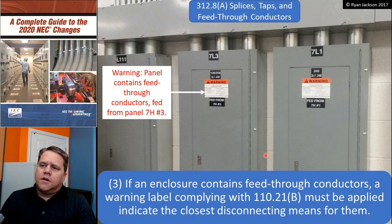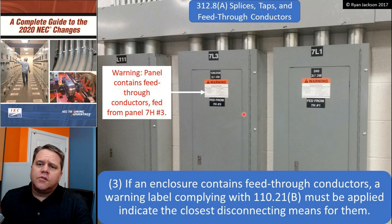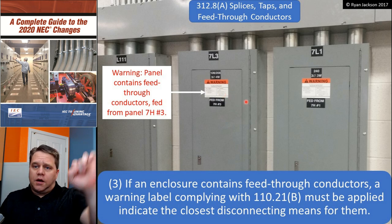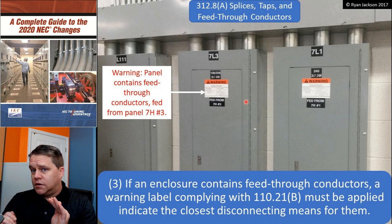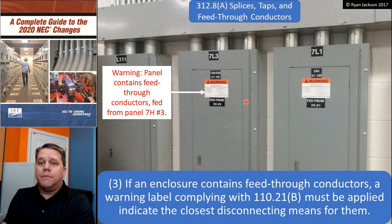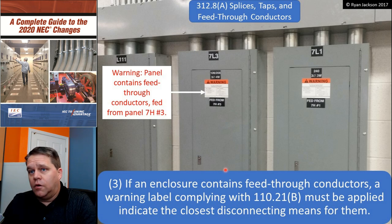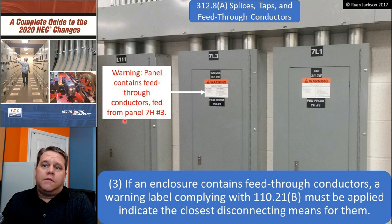Item A3 — I think this was added back in 2011 and it's a good rule: if an enclosure contains feed-through conductors, a warning label complying with 110.21(B) must be applied to indicate the closest disconnecting means for them. The idea is: if this is a main breaker panelboard and I shut off the main breaker, everything in that enclosure should be de-energized. If feed-through conductors remain live, a label should warn me — for example: 'Warning: panel contains feed-through conductors fed from Panel 7H, Circuit 3.' That tells me how to shut them off.